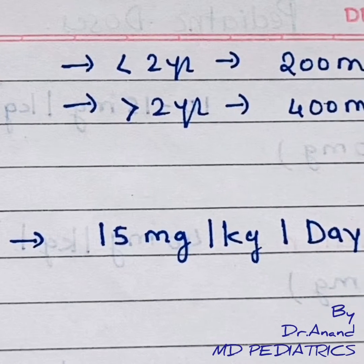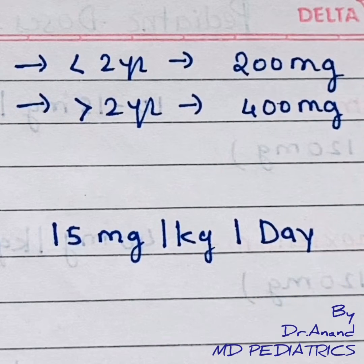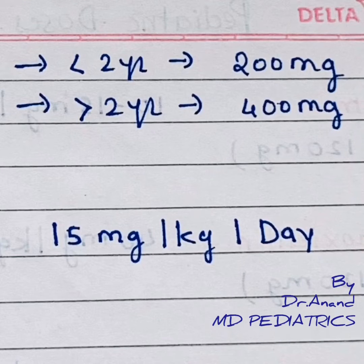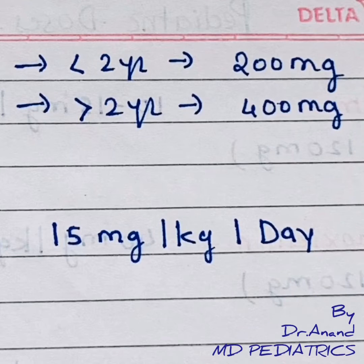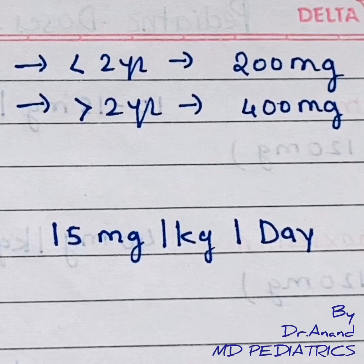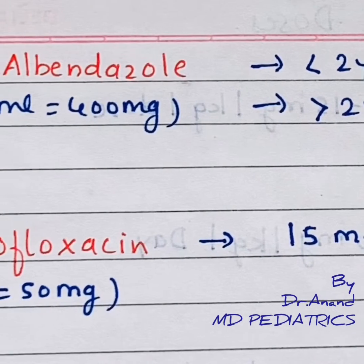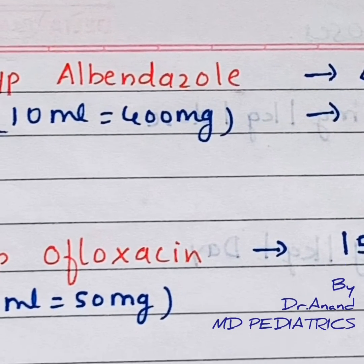The dosage is very important. For basic ascaris, hookworms, and pinworms, the dose is 400mg as a single dose in children more than 2 years. For less than 2 years, it is 200mg single dose.